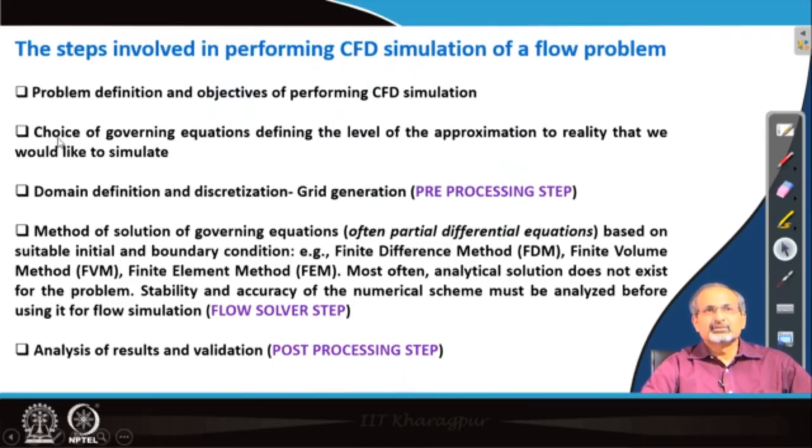If you go to the next step you see the choice of governing equations defining the level of approximation to reality that we are actually looking for. We may or may not always look for very close approximation to reality because very close approximations would generally be very expensive. We have to essentially do a trade off here and accordingly the governing equations get defined. You may say that if you are doing a lot of trade off and you are compromising then the governing equations in general will look simpler and vice versa.